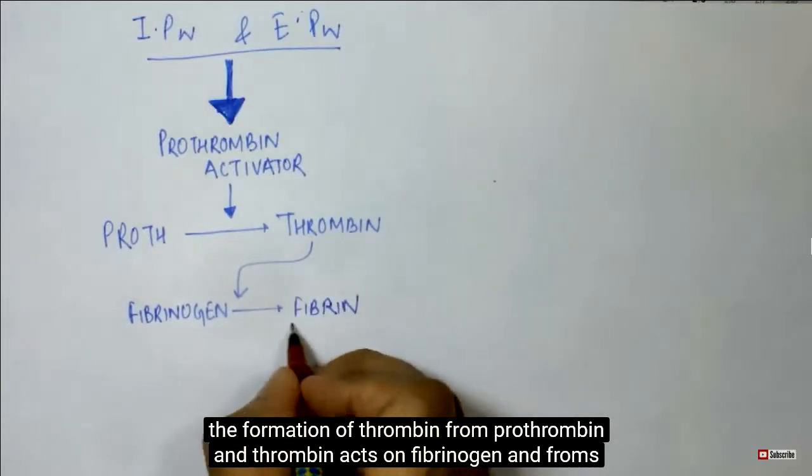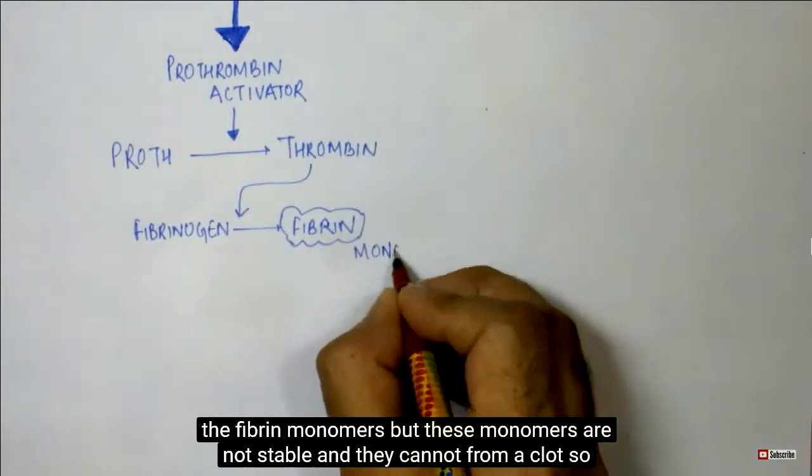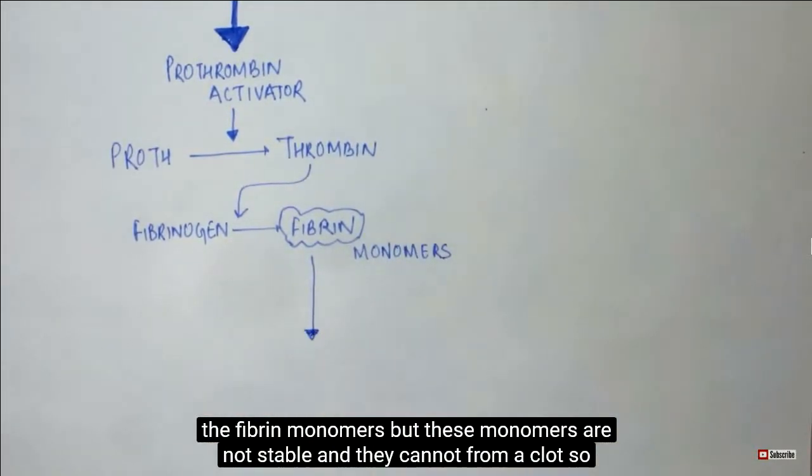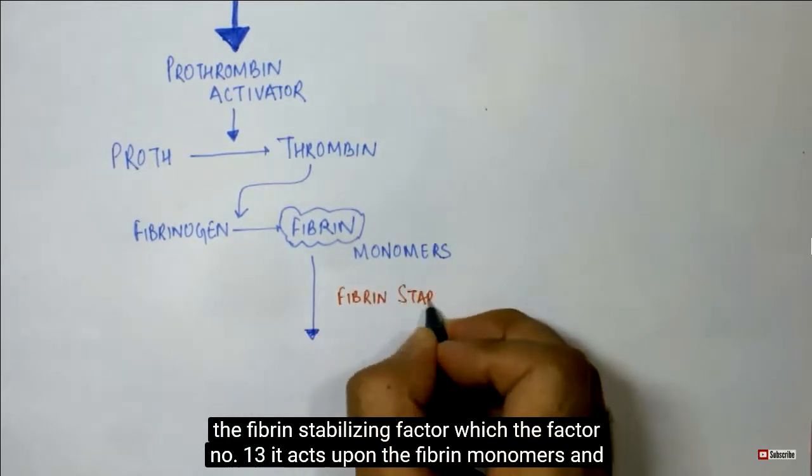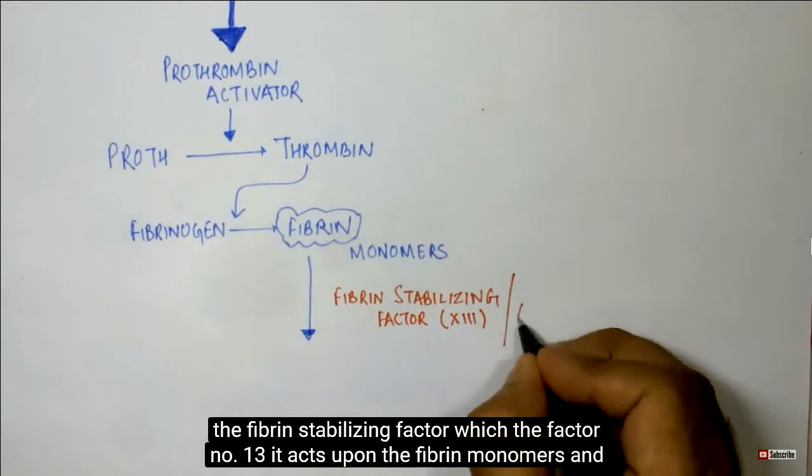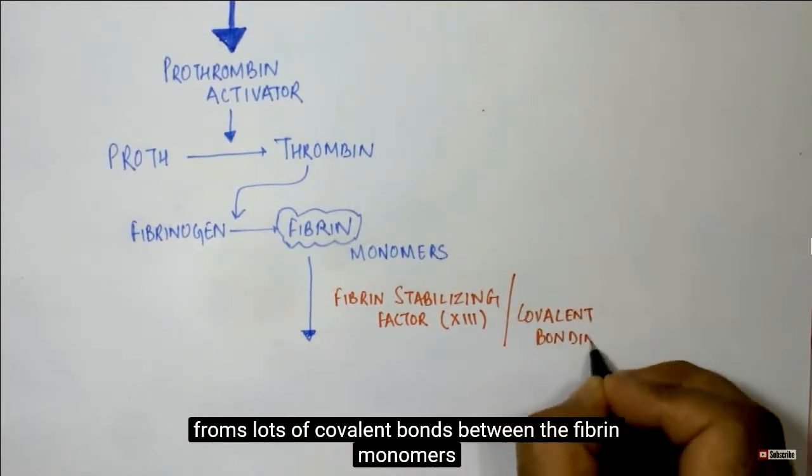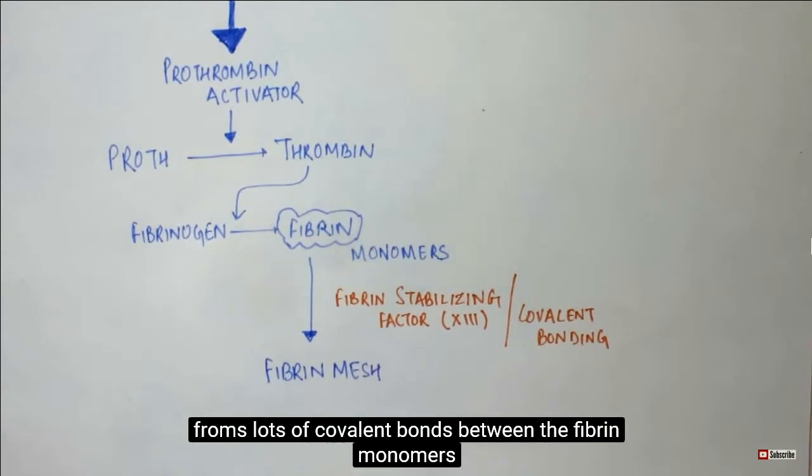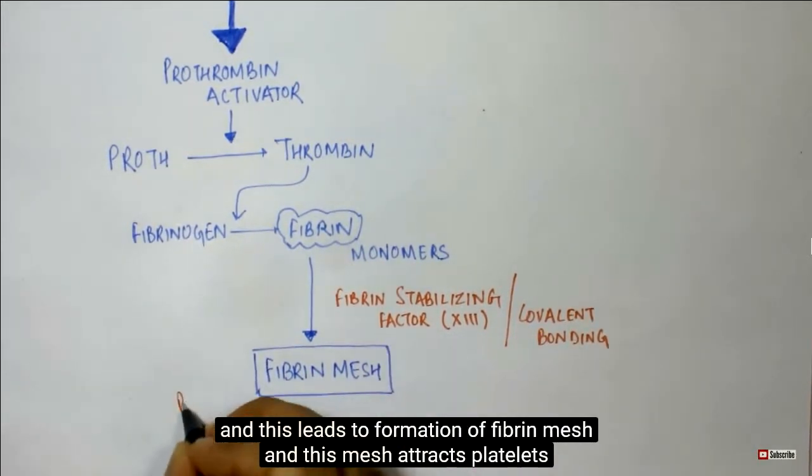Thrombin acts on fibrinogen to form fibrin monomers. But these monomers are not stable and they cannot form a clot. So, the fibrin stabilizing factor, which is the factor number 13, acts upon the fibrin monomers and forms a lot of covalent bonds between the fibrin monomers. And this leads to the formation of a fibrin mesh.